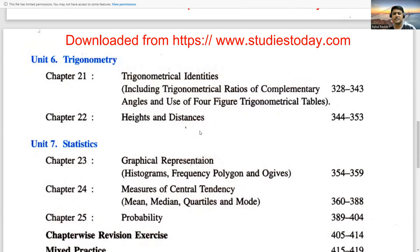Unit 7 has Statistics. In that we will see graphical representation of histograms. Different graphs are there we can see in this chapter. Then frequency polygons, ogives. Then measures of central tendency, that is mean, median, quartiles, modes. And the last chapter is Probability.